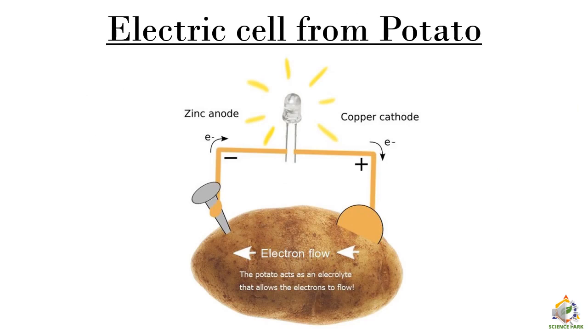Do you know the potato we eat can also be used as an electric cell? Yes. Potato contains starch which acts as an electrolyte that allows the electrons to flow within it. We have to take a nail made up of zinc which acts as a negative terminal and another coin or a plate made up of copper which acts as a positive terminal. But the electricity or the current we get from this cell is very low. Hence it can be used to power an LED for a few times.